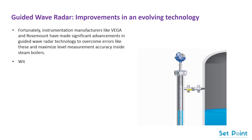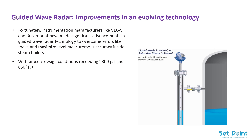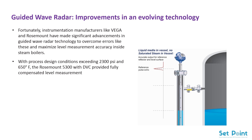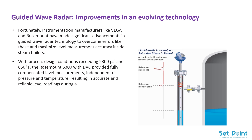With process design conditions exceeding 2300 PSI and 650 degrees Fahrenheit, the Rosemount 5300 with DVC provided fully compensated level measurements, independent of pressure and temperature, resulting in accurate and reliable level readings during all start-up and shutdown conditions, regardless of the weather.